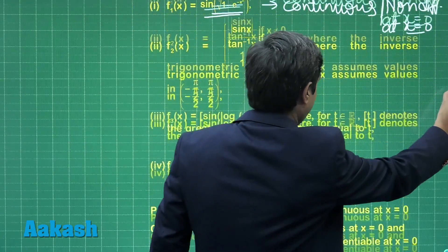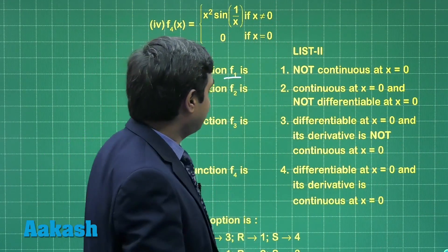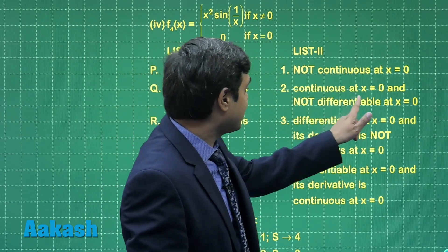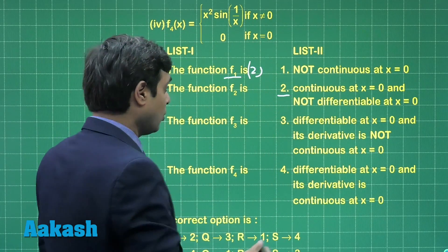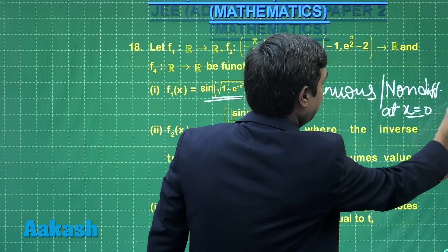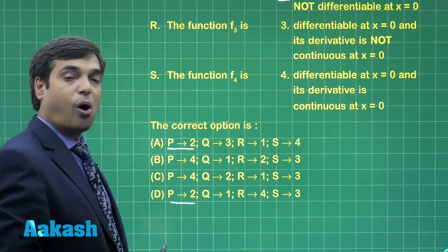There is no need to find the LHD and RHD for this question. Function f1, first says not continuous, second says continuous at x equals 0 and not differentiable. Meaning for the first one it is 2. When we look at the codes simultaneously, we can see here p2, meaning either a or d.